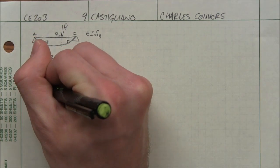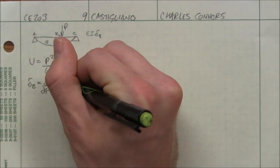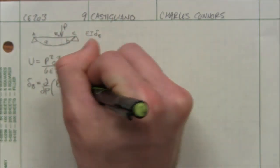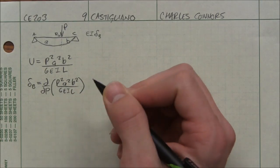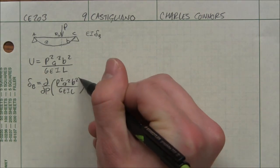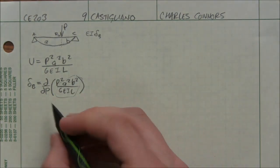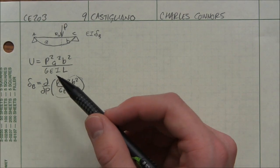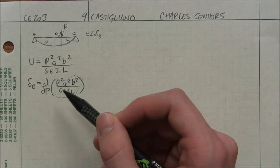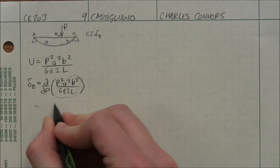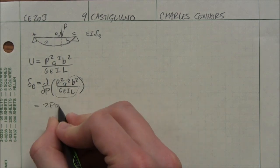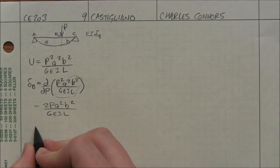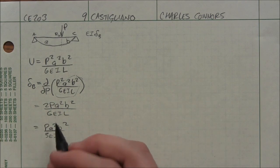So I say delta B equals the partial derivative with respect to P of exactly what I just wrote down. So think of P as our new variable. Anything that is not P becomes a constant. So everything here is now a constant. Now, think of it in terms of if this was X, the derivative of X squared with respect to X is 2X. It's the same thing with our P. So 2P times A squared B squared over 6EIL. And this 2, 6 reduces to... And we're done.